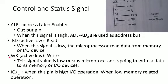Next is the WR (Write) signal. When this signal value is low, the microprocessor is going to write data to its memory or I/O device. The microprocessor outputs data to the memory or output device.